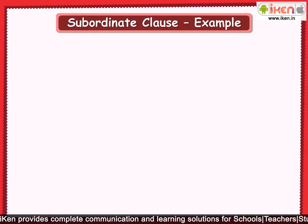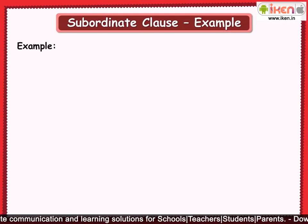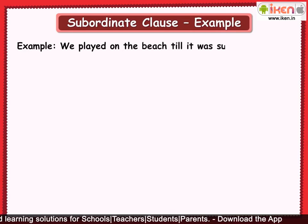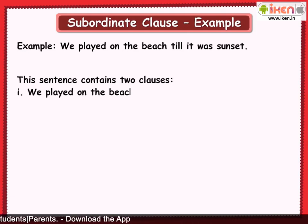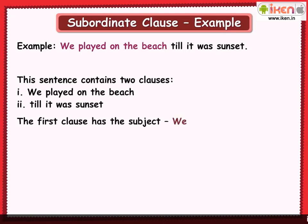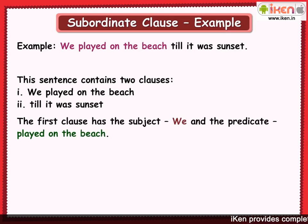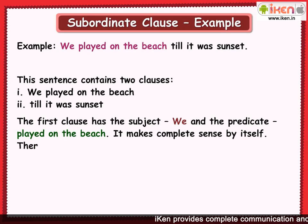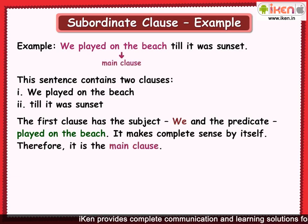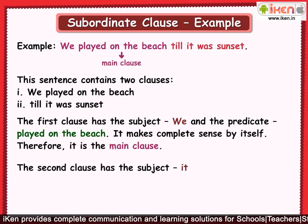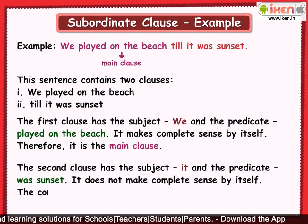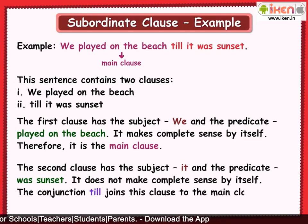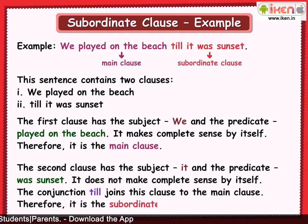Let's take a look at one more example of a subordinate clause: 'We played on the beach till it was sunset.' This sentence contains two clauses: 'We played on the beach' and 'till it was sunset.' The first clause has the subject 'we' and makes complete sense by itself — therefore it is the main clause. The second clause does not make complete sense by itself. The conjunction 'till' joins it to the main clause, so it is the subordinate clause.